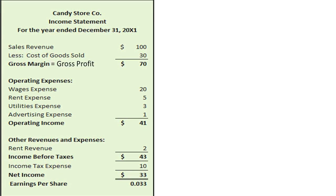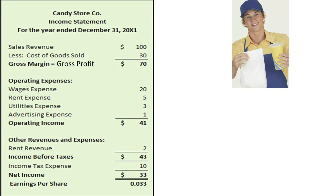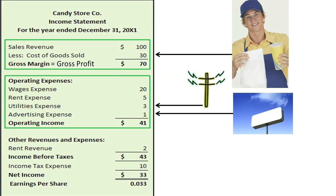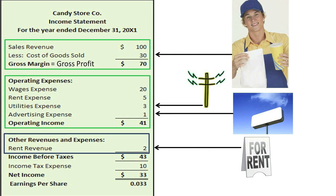The Candy Store Company Multi-Step Income Statement provided below is from the last topic. In it, its revenues and expenses were classified based on how closely each item related to delivering goods and services to customers. The more closely tied they are, the more likely they will be classified as part of gross margin or operating income. The less closely the items relate, the more likely they will be classified as other revenues and expenses.